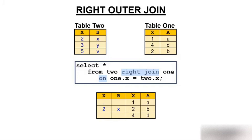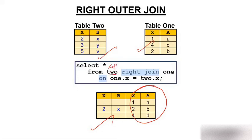Similarly for right join: table2 is now the left table and table1 is the right table in the query SELECT * FROM 2 RIGHT JOIN 1 ON 1.x = 2.x. You get every information of the right table, but only the matching information of the left table. The query uses ON instead of WHERE, and only the matching row 2.x appears from the left side.